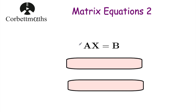In this video, we're going to focus on solving equations in the format AX equals B, where A, X, and B are all matrices. Whenever you solve an equation like this, we can't divide both sides by A. What we actually have to do is multiply both sides of the equation by another matrix — specifically, the inverse of A. The reason we do that is if we multiply A by its inverse, the inverse of A multiplied by A equals the identity matrix I.